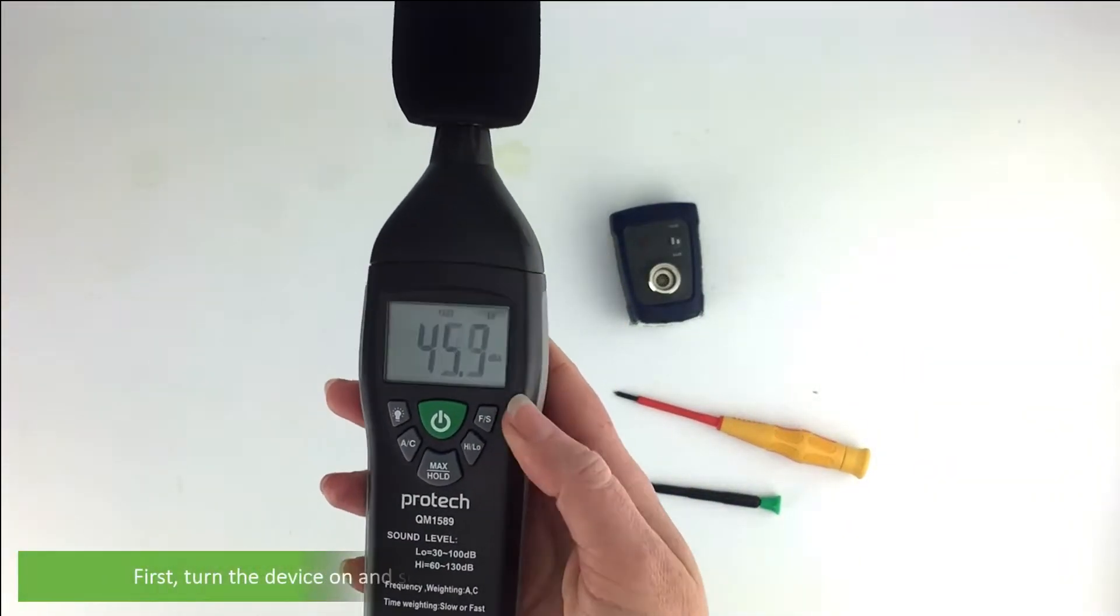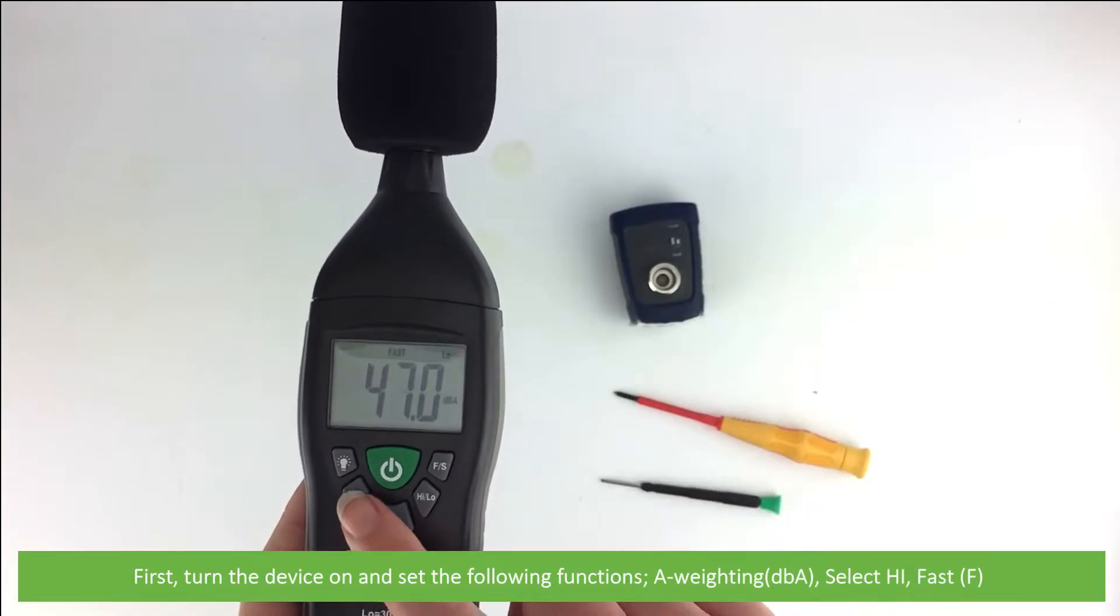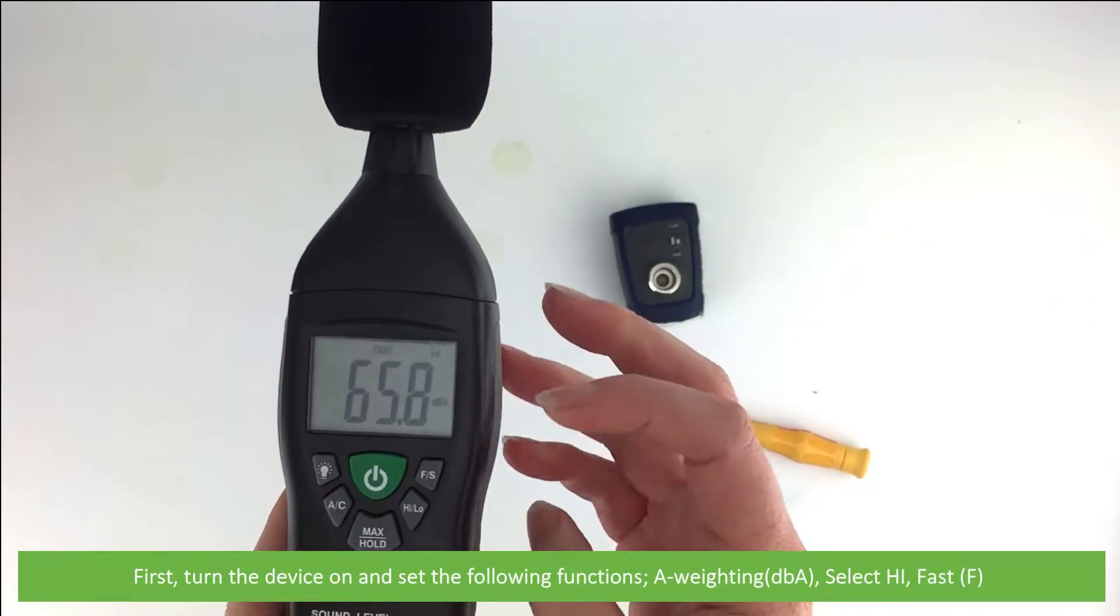First of all turn the device on and set the following functions. Needs to be in A weighting, this is DBA.